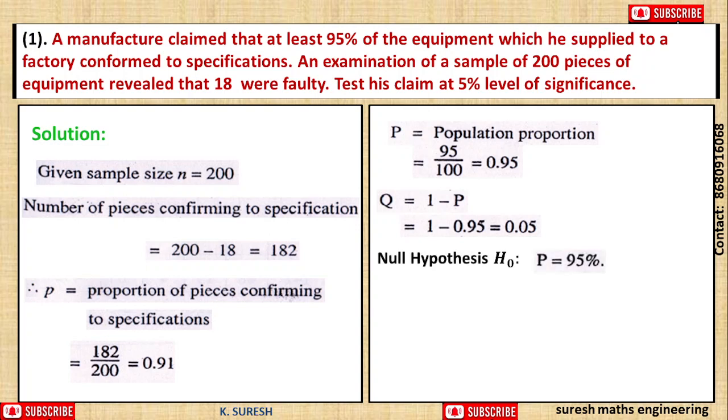If we set the hypothesis, null hypothesis for single proportion: P is equal to 95%. There is no significant difference between population mean.